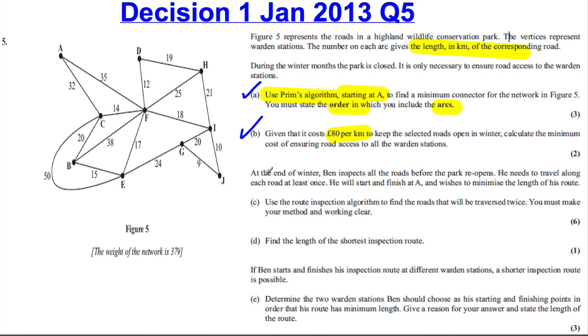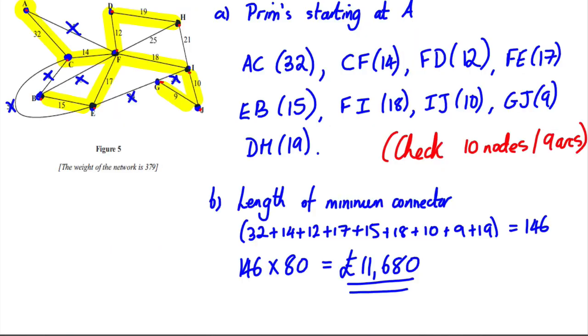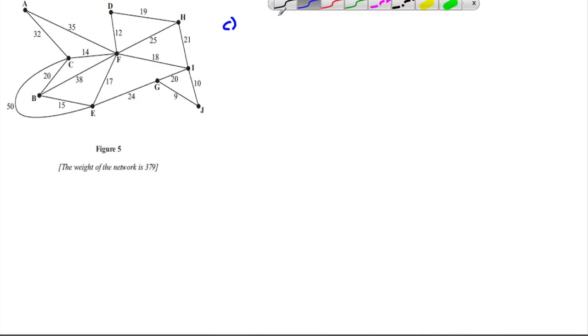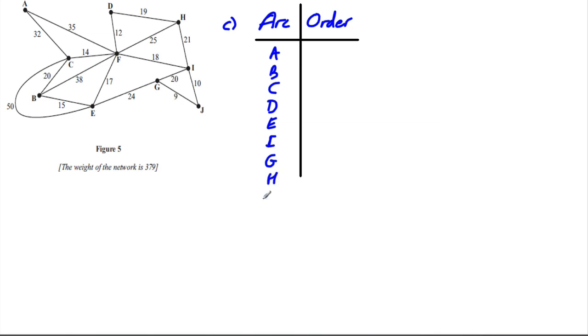Okay, so let's go back to the original question. We've done part A and part B. The rest of it actually turns out to be a Chinese postman because it says, at the end of winter, Ben inspects all the roads before the park reopens. He needs to travel along each road at least once. He will start and finish at A. And he wishes to minimize the length of his route. Use the route inspection algorithm to find the roads that will be traversed twice. You must make your method clear. Find the length of the shortest route inspection. So this is a classic Chinese postman problem. Starting and finishing at A. So let's do this one, part C and D. First thing we need to do is identify the order of each arc.